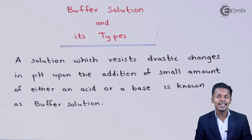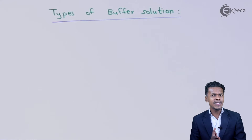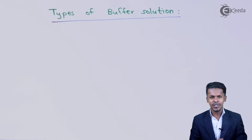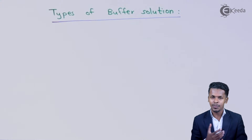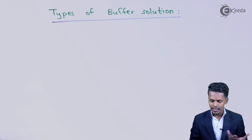So now let us understand the types of buffer solution. Basically there are two types: one is known as the acidic buffer solution, and the other is known as the basic buffer solution.